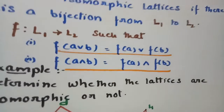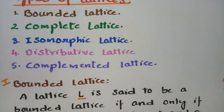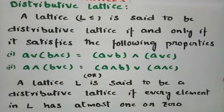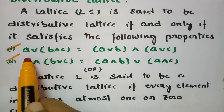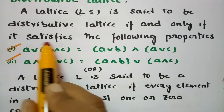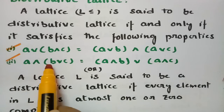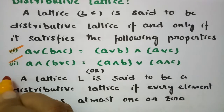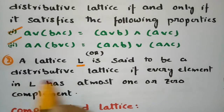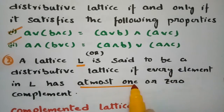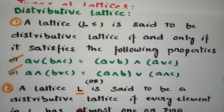Next is the distributive lattice. A lattice L is said to be a distributive lattice if and only if it satisfies: (1) A ∨ (B ∧ C) = (A ∨ B) ∧ (A ∨ C), and (2) A ∧ (B ∨ C) = (A ∧ B) ∨ (A ∧ C). Alternatively, a lattice is distributive if every element has at most one complement.